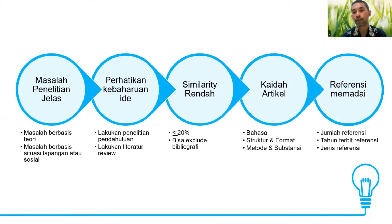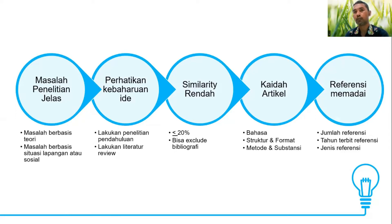Jenis referensi yang bisa digunakan antara lain kutipan dari prosiding, buku, ensiklopedi, artikel jurnal, laporan penelitian seperti skripsi, tesis, disertasi, atau sumber lain. Di dalam penelitian teologi Kristen, misalnya penelitian Biblika, kita bisa menggunakan konkordansi, leksikon, dan beberapa tafsiran meski usia terbitnya cukup lampau. Namun kita tetap perlu menggunakan sumber-sumber yang mengimbangi untuk memastikan kajian itu relevan dalam konteks masa kini.